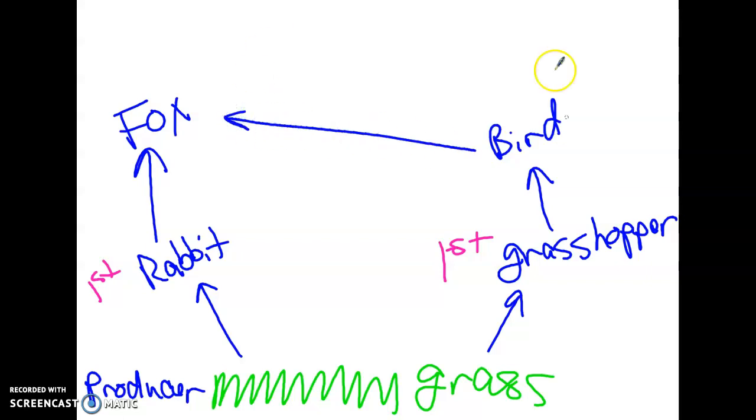You will notice, and this is super important, the arrows point in the direction of energy transfer. The fox is getting energy from the bird, so the energy that's stored in the bird is being transferred to the fox. So now let's label these really quickly so I don't forget. So the rabbit is eaten by a fox. That makes the fox a second level consumer. And so is the bird, second level consumer. But uh-oh, when the bird is eaten by the fox, now the fox is also a third level consumer.